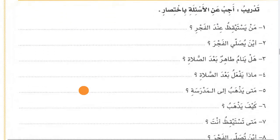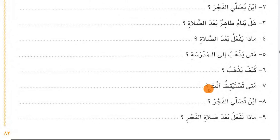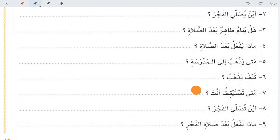Then you will write short answers to the questions according to the lesson. At the end there are three questions you will answer according to yourself. Female students need to change the verb forms - for example, تستيقظ is for male, so you write تستيقظين.